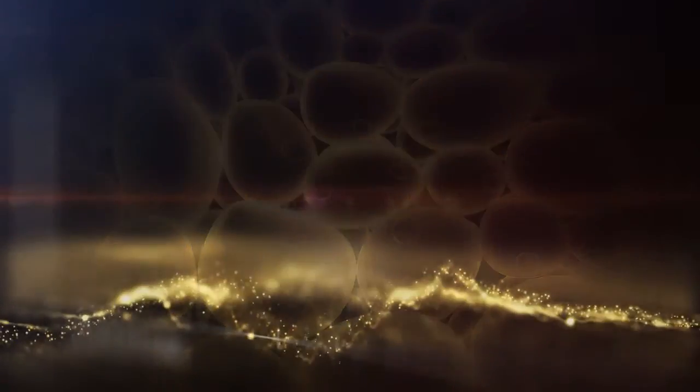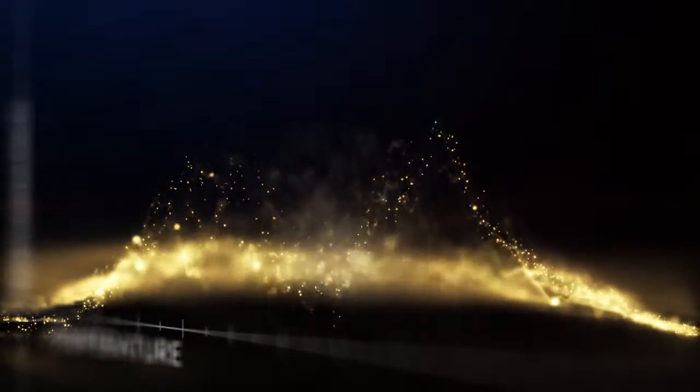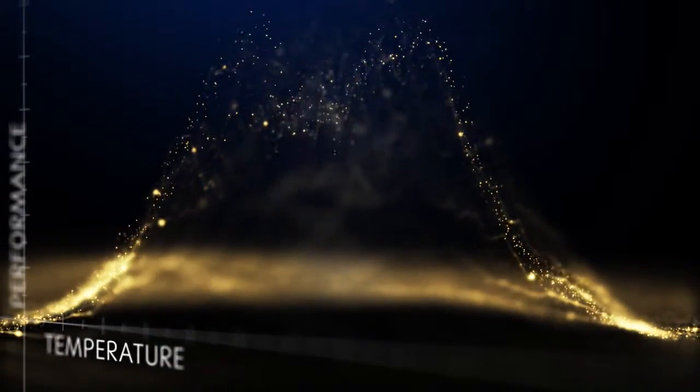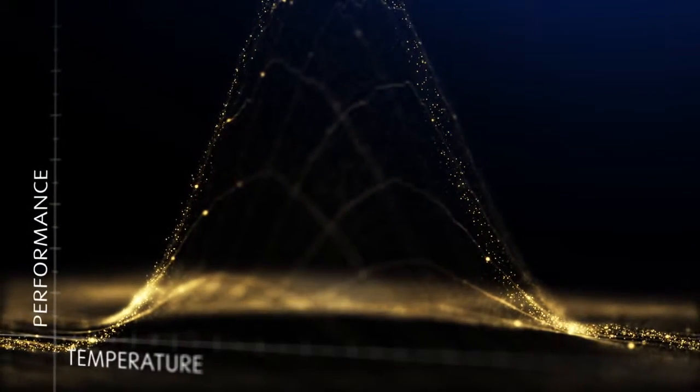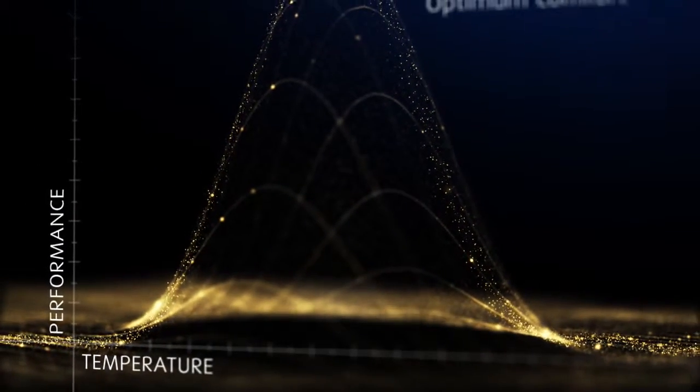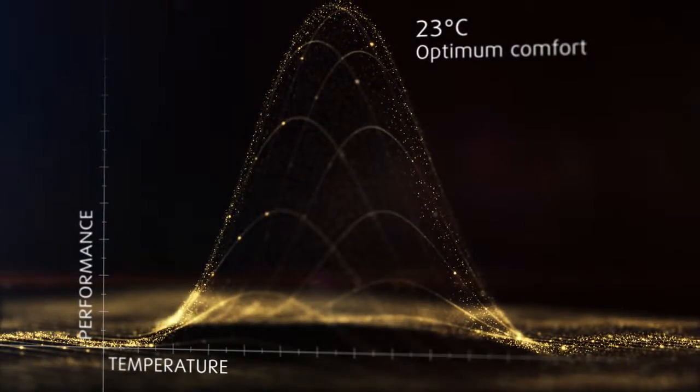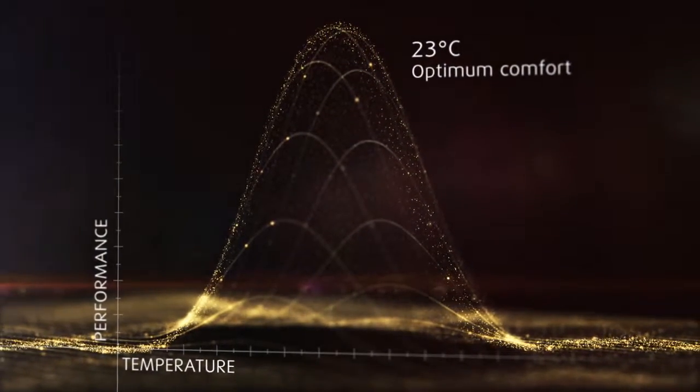And here's how it works. The graph shows the effect temperature has on the behavior of certain foams, and the curve tells us how TEMPUR material has been precision engineered to give optimum comfort and support at around 23 degrees Celsius, or average bedroom temperature.